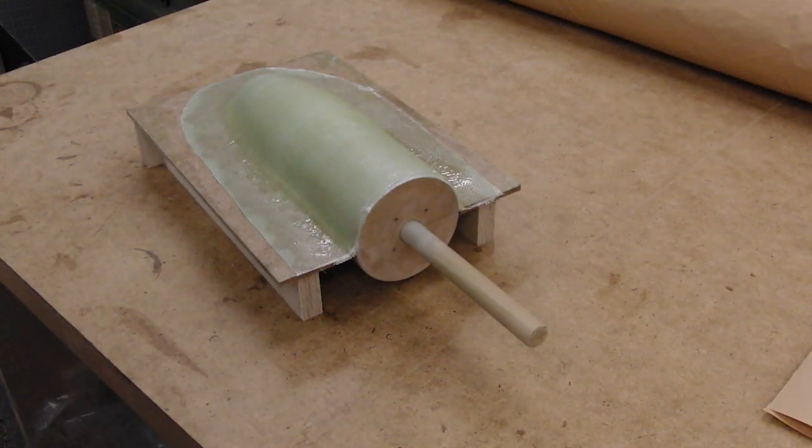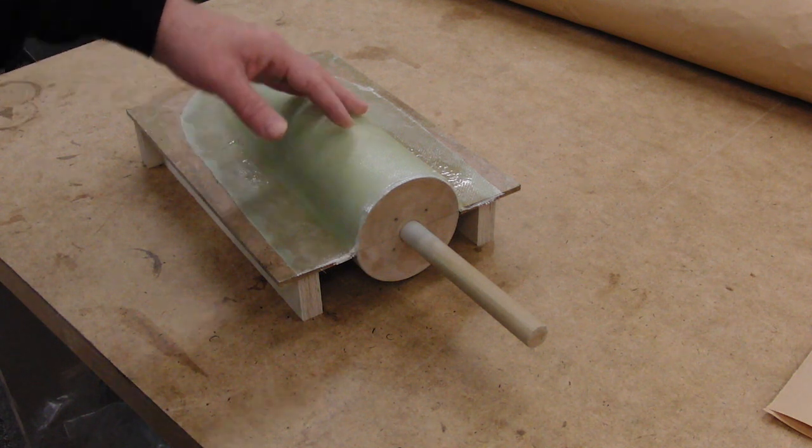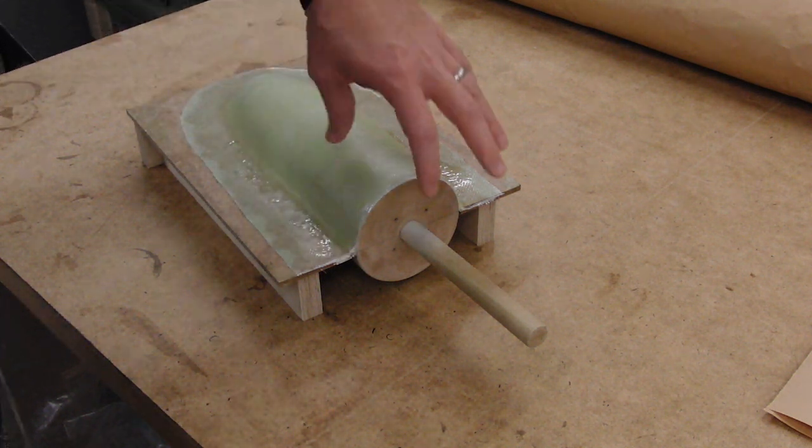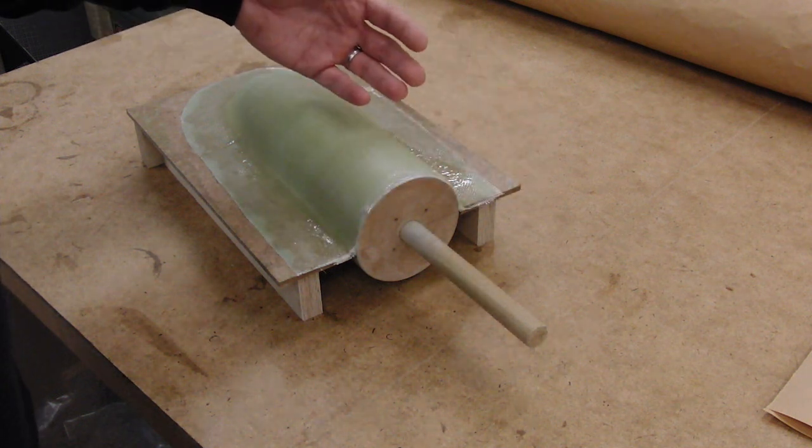Now that the first half is fully cured, we're going to separate it from the parting board. But we want to be careful and leave the plug and the mold together and separate both from the parting board.